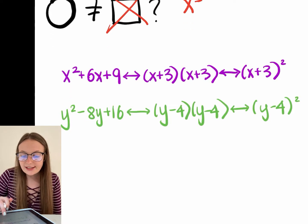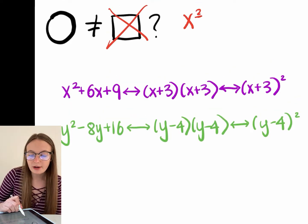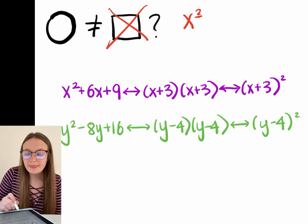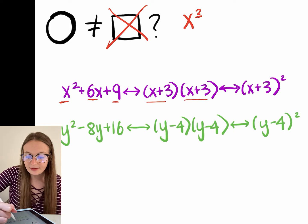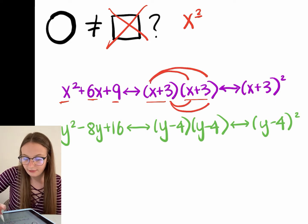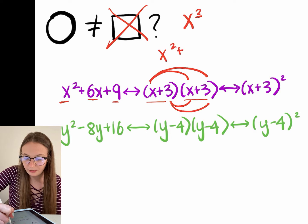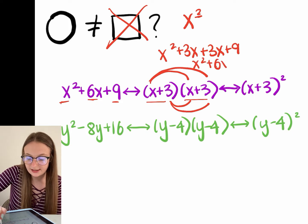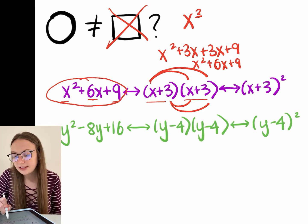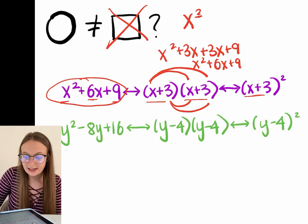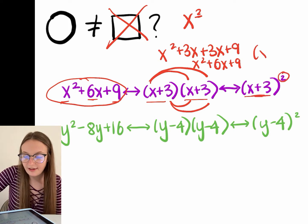Let's talk about how to go from the trinomial version to the squared version. If you have x squared plus six x plus nine, that can alternatively be written as x plus three times x plus three. When you foil, you get x squared plus three x plus three x plus nine, which becomes x squared plus six x plus nine — exactly what we already have. And x plus three times x plus three is alternatively written as x plus three squared, the same way x times x is written as x squared.